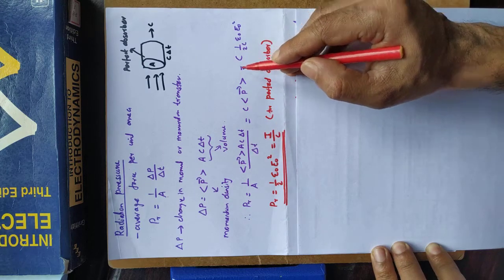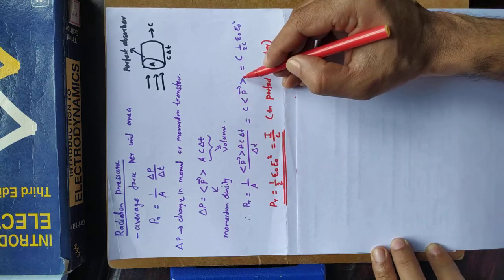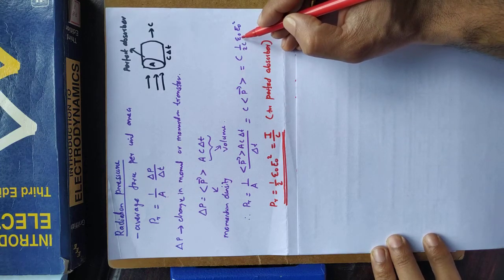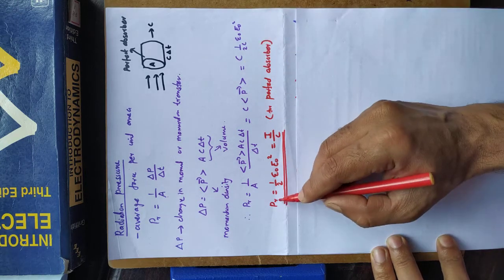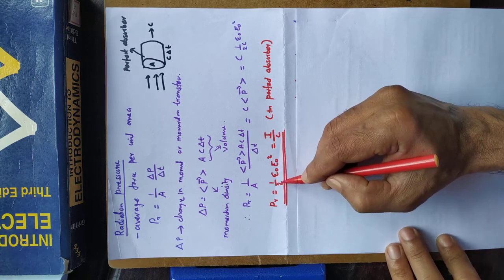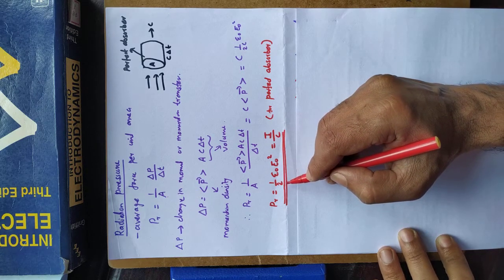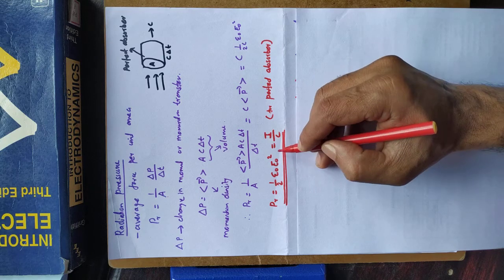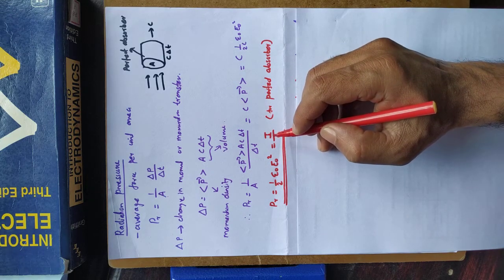Because radiation pressure is defined as (1/A)(delta P / delta T). Delta T cancels and area also cancels, and we get C times average momentum density. The time average for momentum density is (1/2) C ε₀ E₀². C also cancels, and we get radiation pressure PR equal to half ε₀ E₀ squared. And we know half ε₀ E₀ squared relates to intensity.